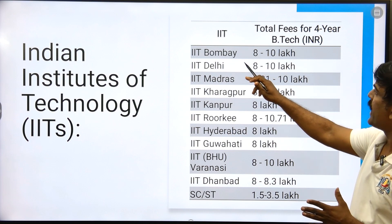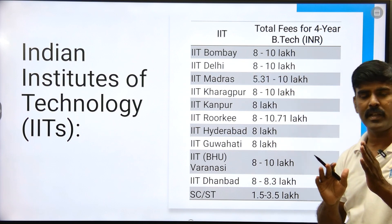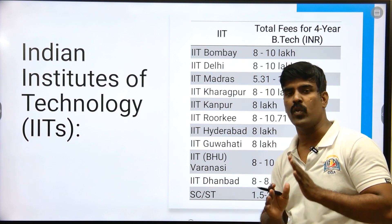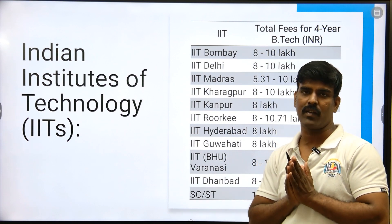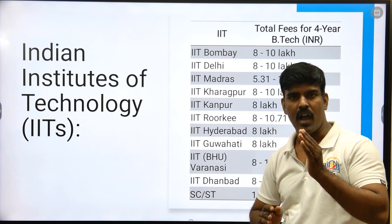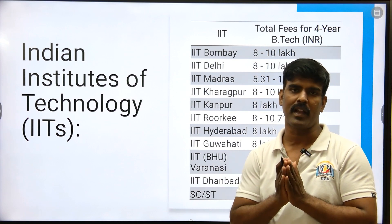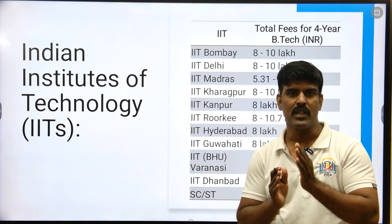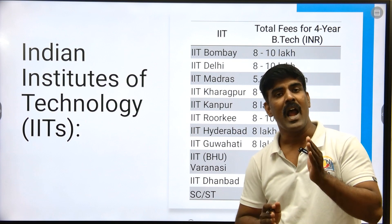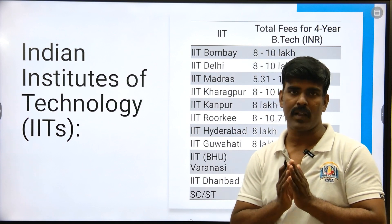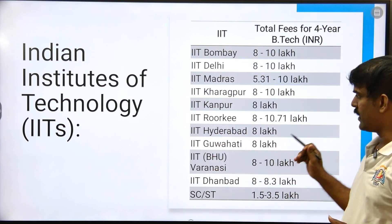By that way, you get eight to ten lakh fees for all four years. But you also have to pay hostel fees. For one year, you pay hostel fees. After each semester, you collect the total. They charge around 30,000 to 45,000 for mess. This is the fee structure for IIT.